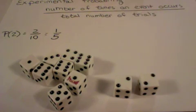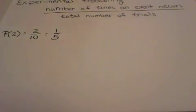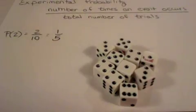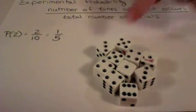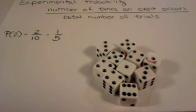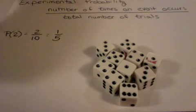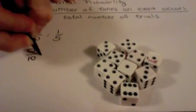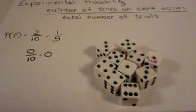Let's try the experiment again. Let's see if we get the same answer. If I roll again all 10 of my dice, this time I didn't roll any 2's. So the probability of rolling a 2 on this trial would be 0 out of 10, which is simplified to 0.